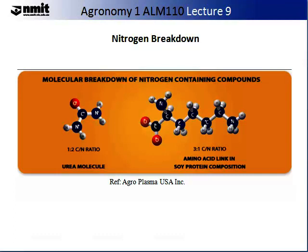Nitrogen can be broken down and supplied as either urea or an amino acid, and the carbon to nitrogen ratio changes depending on these molecules. For example, in the urea molecule there is a 1:2 carbon to nitrogen ratio, while in the amino acid linkage found in soy protein composition there is a 3:1 carbon to nitrogen ratio.